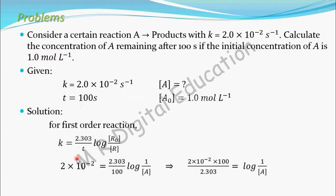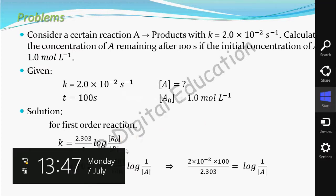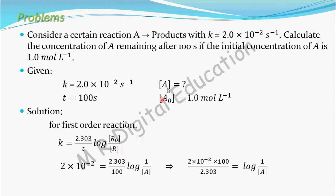Substituting the values: K equals 2.0 into 10 to the power minus 2, time is 100 seconds, and A₀ is 1.0 mole per liter. Taking 100 to one side and 2.303 to the other side, we get: 2 into 10 to the power minus 2 into 100 divided by 2.303 equals log of 1 by A.